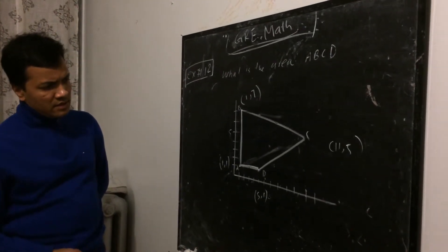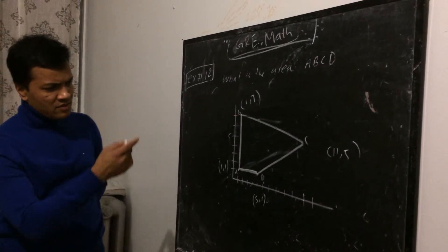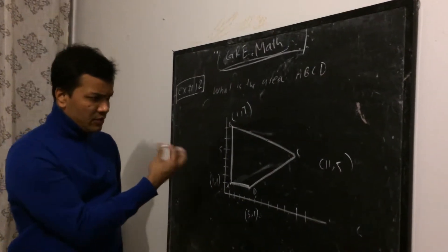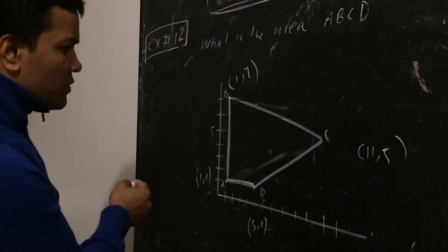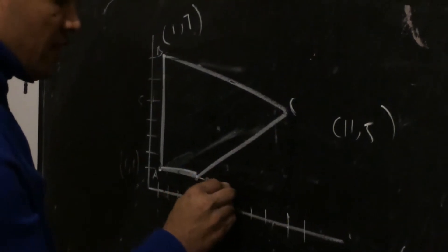We cannot - this is not regular shape, so we cannot, this is not triangle, not rectangle. So we cannot use this formula. So we have to use the technique. What technique? So let's draw, let's make it look like a rectangle first. Let's see how that works out.